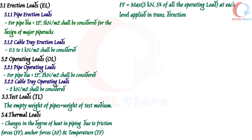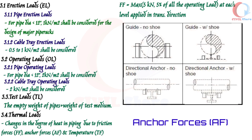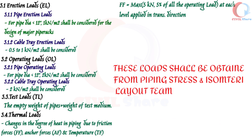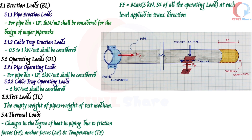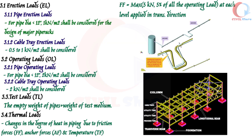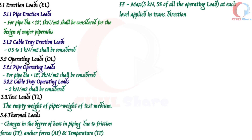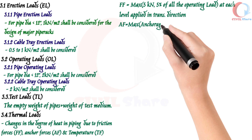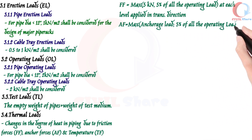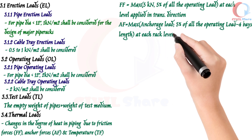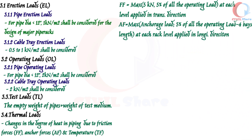Anchor forces (AF): anchor and guide forces and locations shall be obtained from the piping stress analysis and piping isometric drawings. Normally, pipe anchor and guide forces are produced from thermal expansion, internal pressure, and surge. Pipe rack beams, struts, columns, braced anchor frames, and foundations shall be designed to resist actual pipe anchor and guide loads. The calculated anchor force shall be taken as the larger of: the anchorage load, or 5% of all the operating load over four bays' length at each rack level applied in the longitudinal direction.